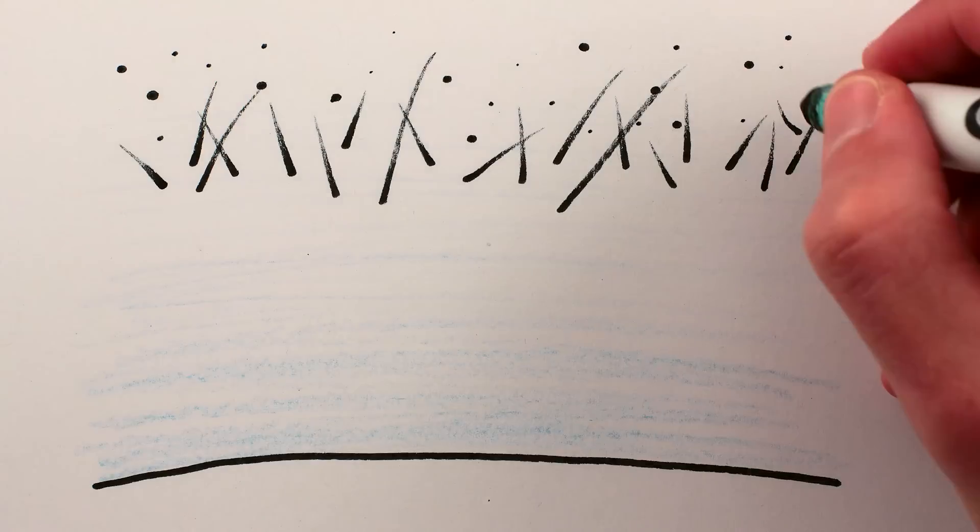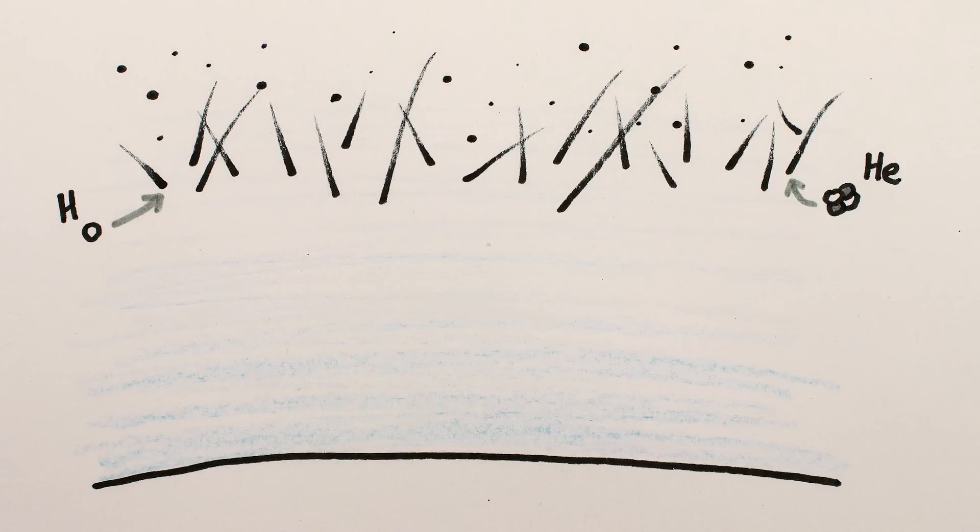Every second, thousands of cosmic rays, mostly hydrogen and helium nuclei, strike every square meter of the Earth's upper atmosphere.